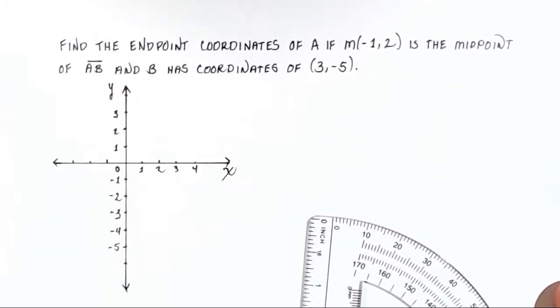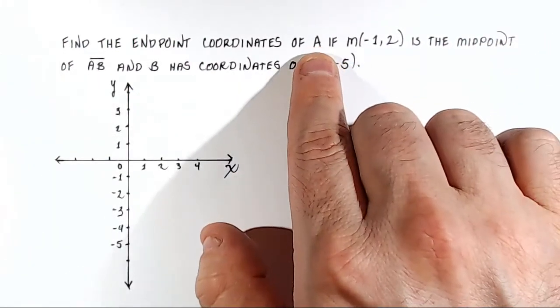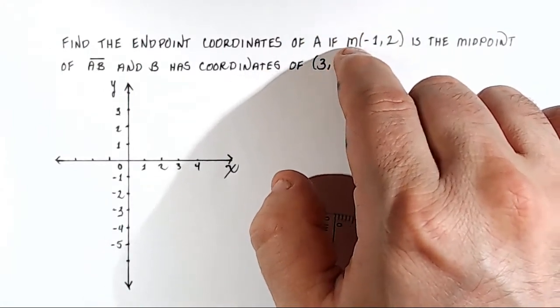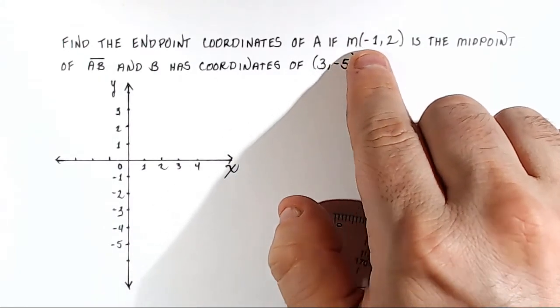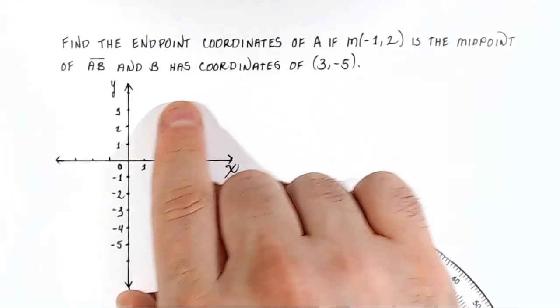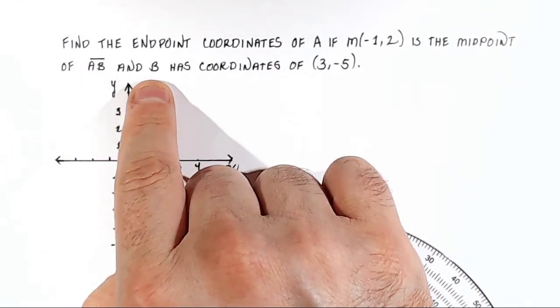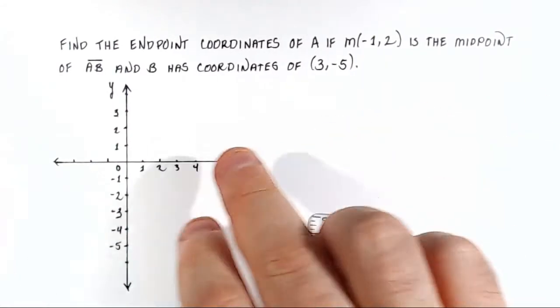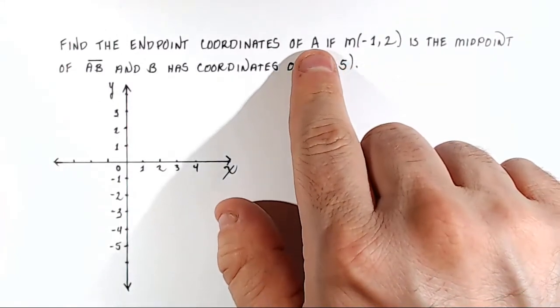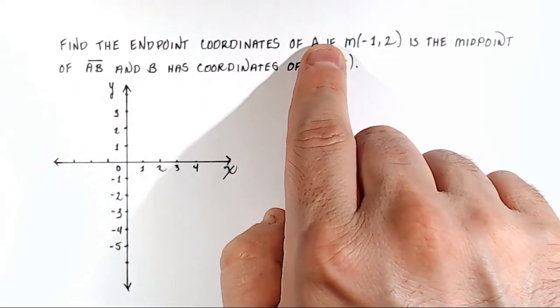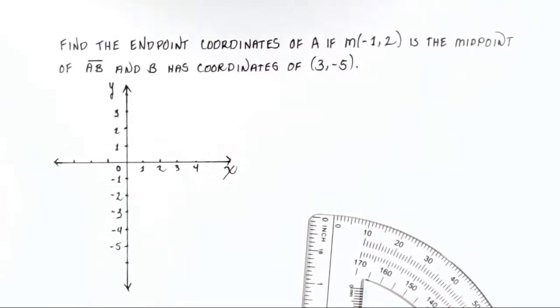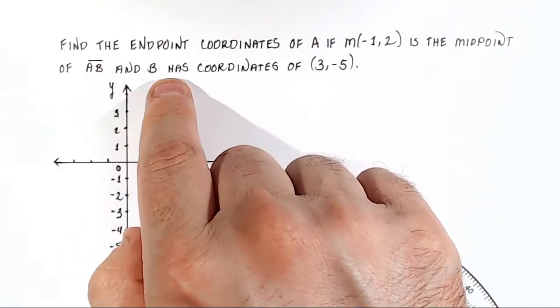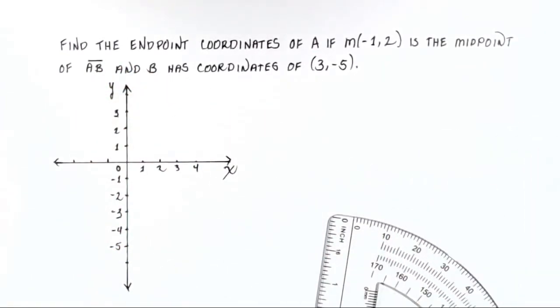So I'm assuming that you've written all this down, and now we're going to do the problem. Find the endpoint coordinates of point A if the coordinates of point M, which is the midpoint, are (-1, 2), is the midpoint of line segment AB, and B has coordinates of (3, -5). So what are we given? We have a line segment called AB. We need to find where it starts at point A. We don't know what that is, but we know what the midpoint is, and we know what the other endpoint is.